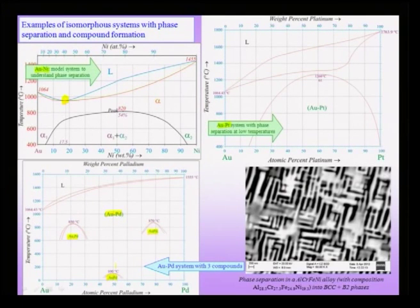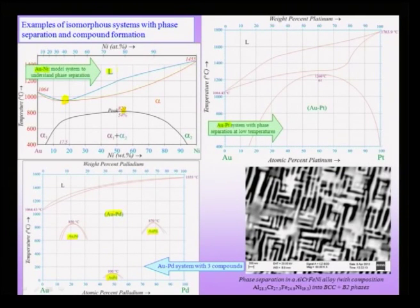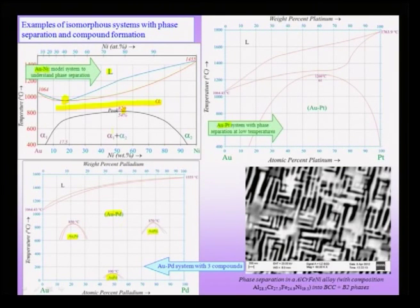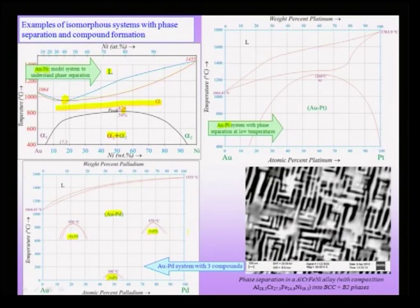Let us start with the first example — the depression in the melting point system, the gold-nickel system. At the peak of this splitting, first you have a liquid phase at high temperatures. At lower temperatures, you have a uniform solid solution alpha forming over a range of temperatures, and if you cool the system even further, it shows phase separation into alpha₁ and alpha₂. Since gold and nickel both have FCC structure, alpha, alpha₁, and alpha₂ are all FCC structures.